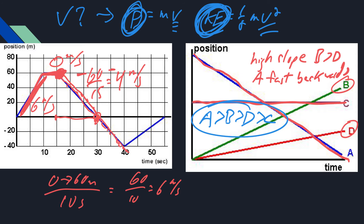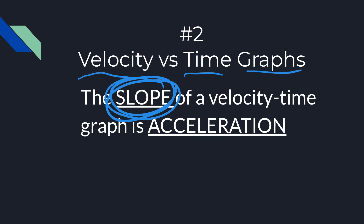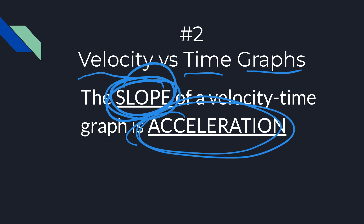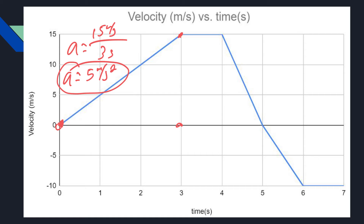The second most common question involves a velocity-time graph. This time the slope is going to be the acceleration. Similarly, they might ask for a straight calculation — for example, from zero to three seconds, what's the acceleration? You find the slope: we're going from zero to 15 meters per second in three seconds, so that's a slope of five meters per second squared, which is the acceleration.